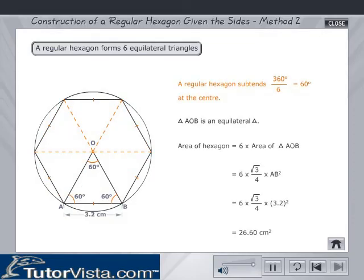A regular hexagon subtends 360 degrees by 6, which is equal to 60 degrees at the center. Triangle AOB is an equilateral triangle. Area of hexagon is equal to 6 into area of triangle AOB.